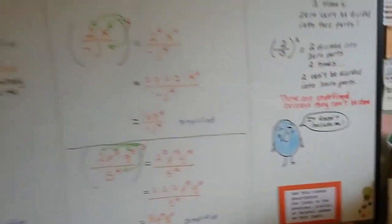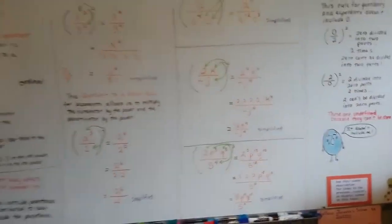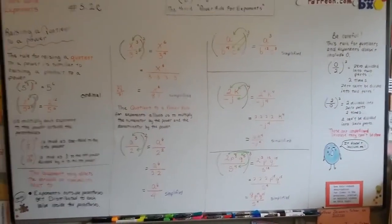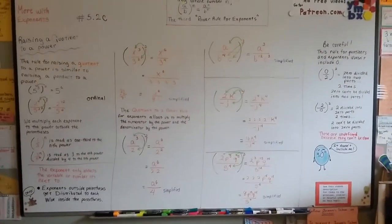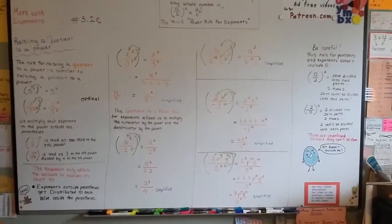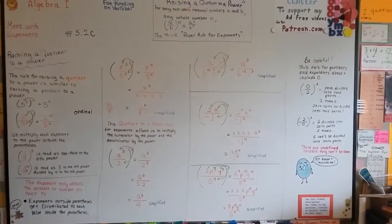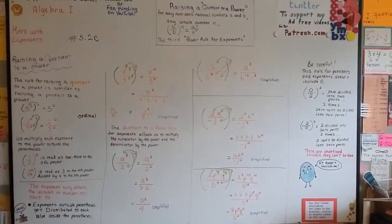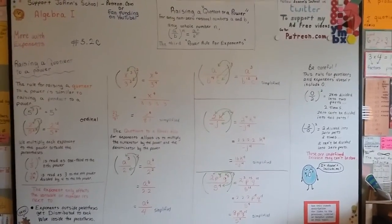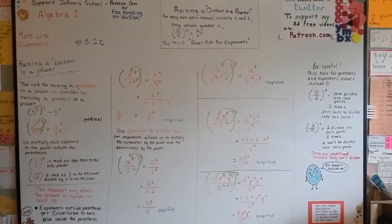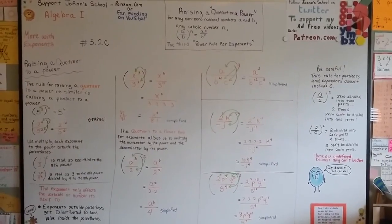I hope I explained this well enough. I know this can be very confusing. But if you watched 5.2a, b, and c, you should have a pretty good grasp on these exponents right now. And there will be links in the description to help you some more if you need it. I'll see you next video. We're going to talk about monomials.